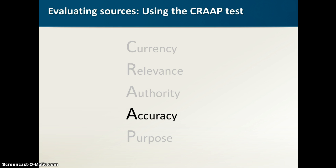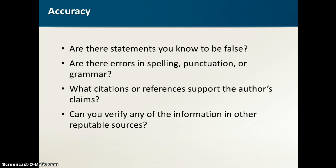Moving on to accuracy — this is another one that can be hard to evaluate if you don't already know a lot about the topic, so we have to look for indirect indicators. Does the site have statements you know to be false? Do they have a lot of writing errors? Someone could have accurate information with writing errors, but it tells me this is someone who doesn't pay attention to detail. What references are they using? If they cite other scholarly articles or well-known reputable organizations, that increases the odds their information is accurate. And finally, can you verify their information elsewhere? If you're drawing from lots of sources, what consensus do you get from looking at all of them combined?